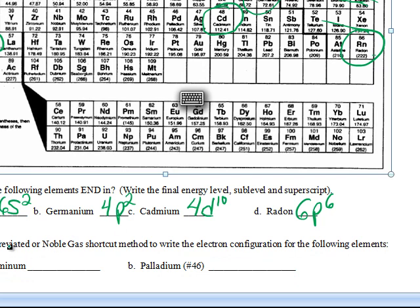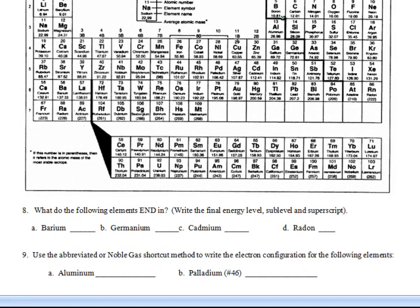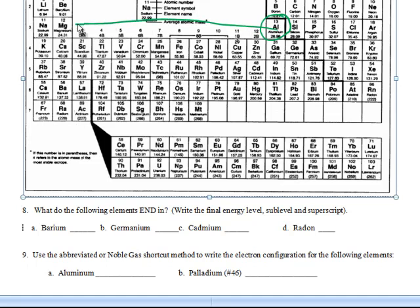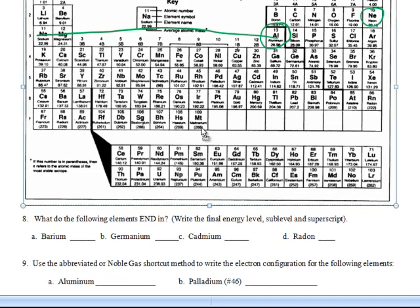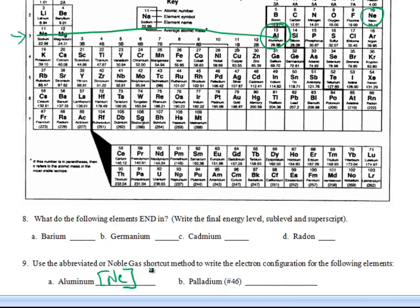Now it says use abbreviated or the noble gas shortcut method to write the electronic configuration for the following elements. Now nobody wants to write out all this stuff. So we're going to be using shortcuts. Now the catch with the shortcuts is you always have to go backwards to the noble gas that comes before it. So if you're looking at aluminum here, aluminum is element 13. In order to find the noble gas that comes before it, you have to go backwards. 12, 11, 10. So it's going to be neon. So write neon in brackets. These are not parentheses, they're brackets. And then you start at the beginning of the row. Whatever row it's in, you start at the beginning of the row and you pick up from there. So this would be 3s2, 3p1.